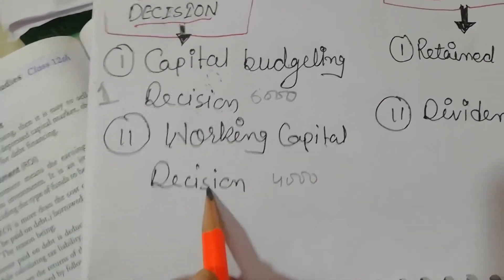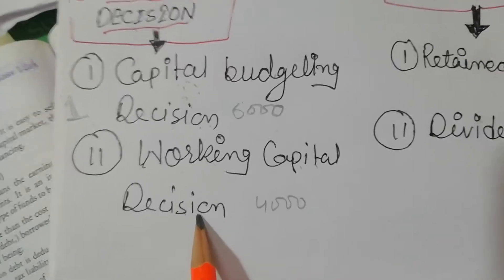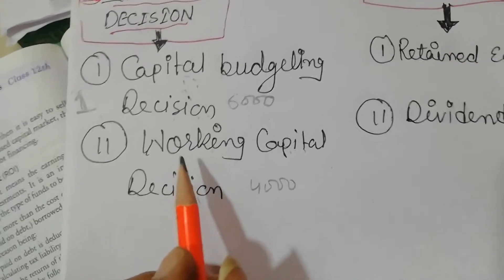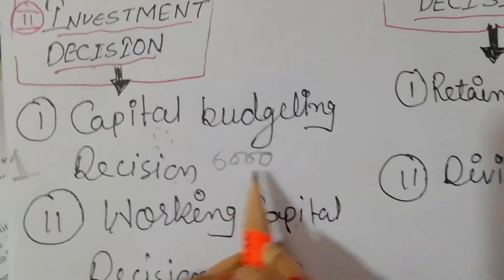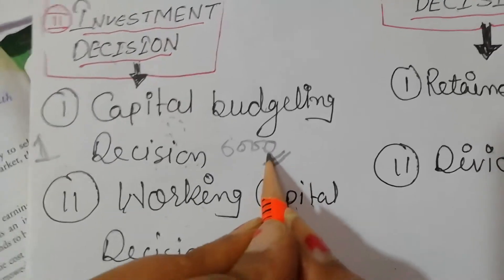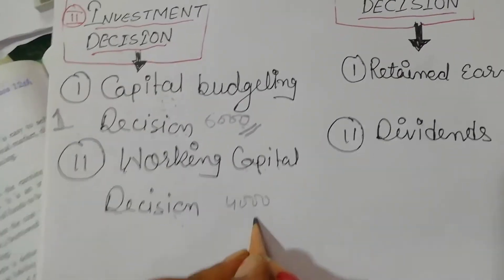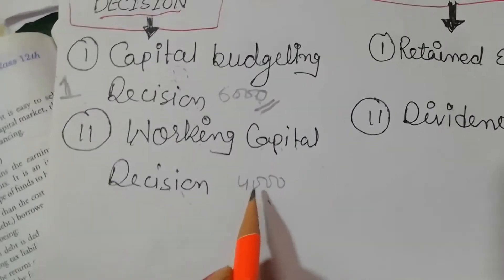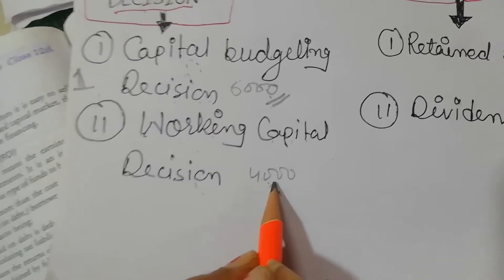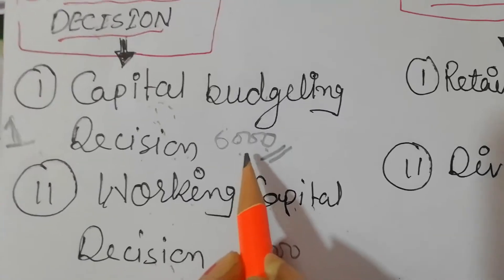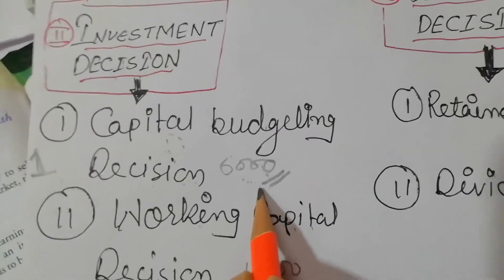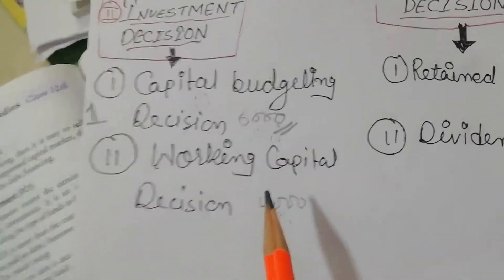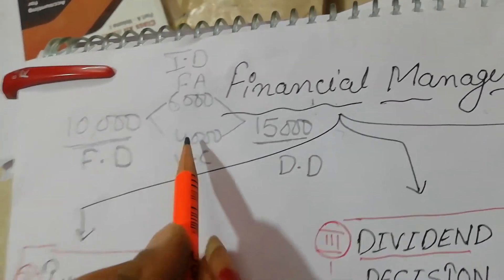Second is the Working Capital Decision. Working capital means the funds required for day-to-day transactions. This investment will convert through a cycle — production, then sale — and then convert back into cash. However, it will not be as fast as capital budgeting since fixed assets cannot be liquidated quickly.